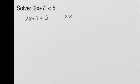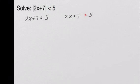Our first problem will be 2x plus 7 is less than 5. Our second problem will be 2x plus 7, and whenever we drop the absolute value bars, we have to consider going the other direction — negative 5 — which will flip our inequality symbol. So when we take the negative sign, we flip the inequality symbol and get greater than negative 5.